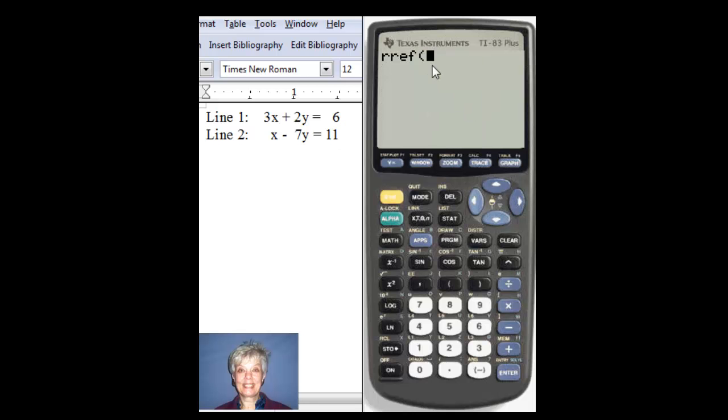Now, I need to put matrix A in there. To do that, I have to access matrix one more time. Second, matrix. This time, I'm just looking for the name. One, which is A, is already highlighted. So, I hit enter. And then I hit enter again.